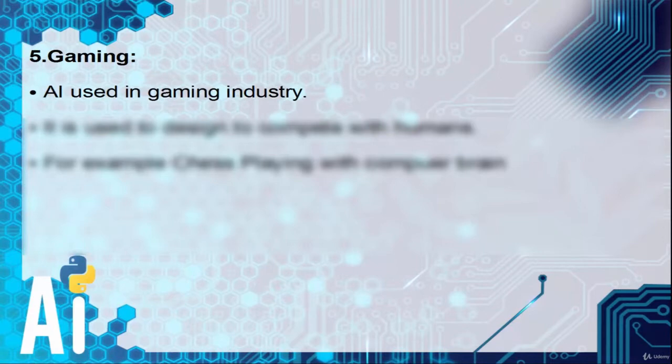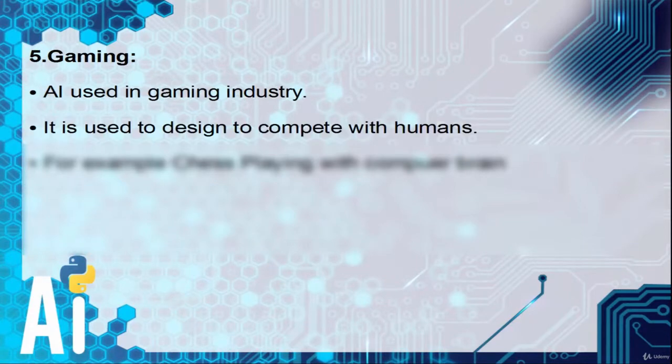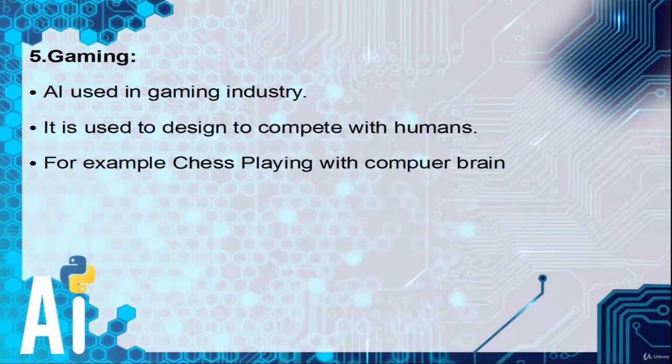Next is gaming. AI is used in the gaming industry. It is used to design systems to compete with humans. For example, chess playing with computer, or even newer games which can defeat the human brain. Advanced AI has even defeated the world champion in chess.